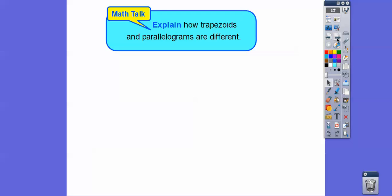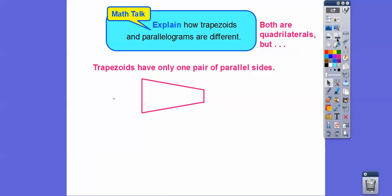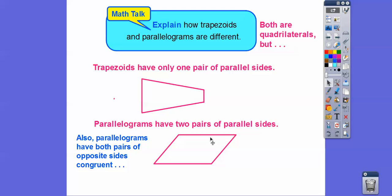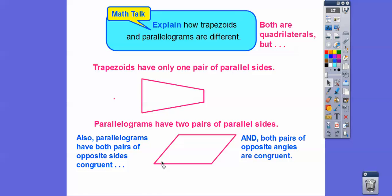Trapezoids are not parallelograms because parallelograms have two pairs of parallel sides. So how are trapezoids and parallelograms different? They're both quadrilaterals, but a trapezoid only has one pair of parallel sides, while a parallelogram has two pairs of parallel sides. Also, parallelograms have both pairs of opposite sides congruent. My geometry class also notes that both pairs of opposite angles are congruent — the obtuse angle equals the opposite obtuse angle, and the acute angle equals the opposite acute angle. This applies to squares, rhombuses, and rectangles too since they're special parallelograms.